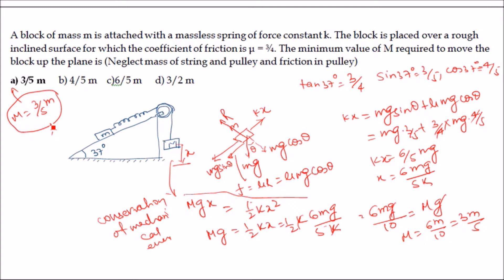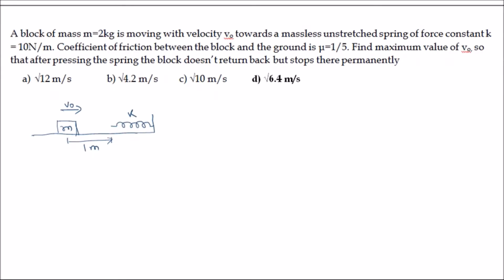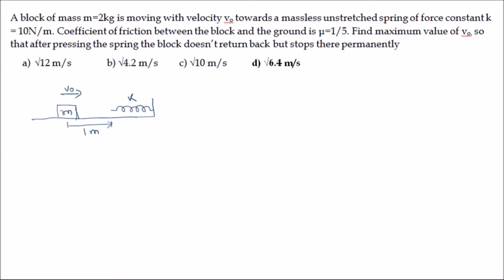To summarize Problem 1: we wrote the free body diagram for small mass m, then applied conservation of mechanical energy for mass M. It's very simple — the problem seems complex but step by step it's easy. Now the next problem: a block of mass m = 2 kg is moving with velocity v₀ toward a massless unstressed spring of force constant k = 10 N/m.